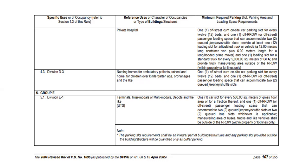Off-street means the loading space is not on the national road or street — it's a drop-off or loading space within the property. Maneuvering areas for buses, trucks, and light vehicles shall be outside the road right-of-way, within the property or lot lines only. You must not plan your loading or parking area so that vehicles maneuver on the street, as this creates traffic.